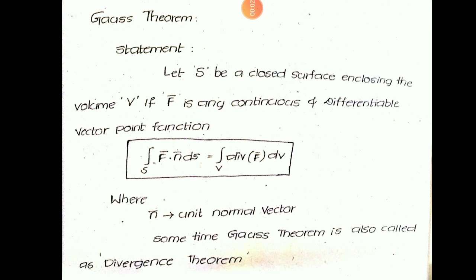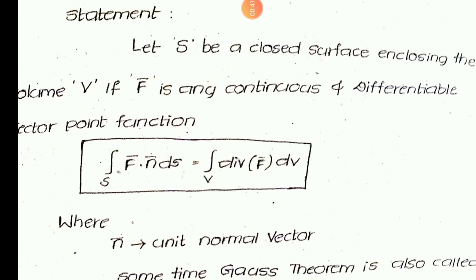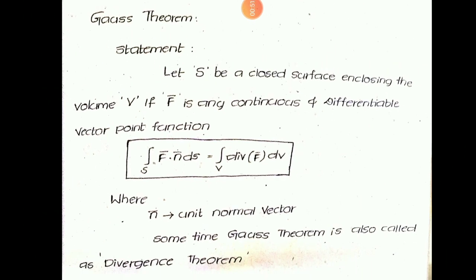This is the last topic of vector calculus, closing the complete parts. We successfully completed Green's theorem and Stokes theorem. Now it is Gauss theorem — the last one. The statement: S is any closed surface enclosed by a volume V, and F̄ is any continuous and differentiable vector point function. Then the integral over S of F̄·N̄ dS equals the integral over V of divergence of F̄ dV.